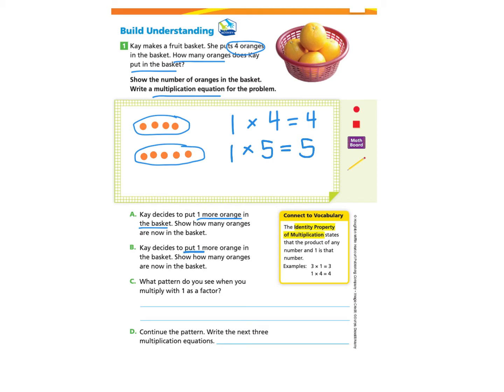Part B, K decides to put 1 more orange in the basket. Show how many oranges are now in the basket. Again, we will create a basket and add 6 oranges. So there's 1 basket and there are 6 oranges. So there are a total of 6 oranges altogether.